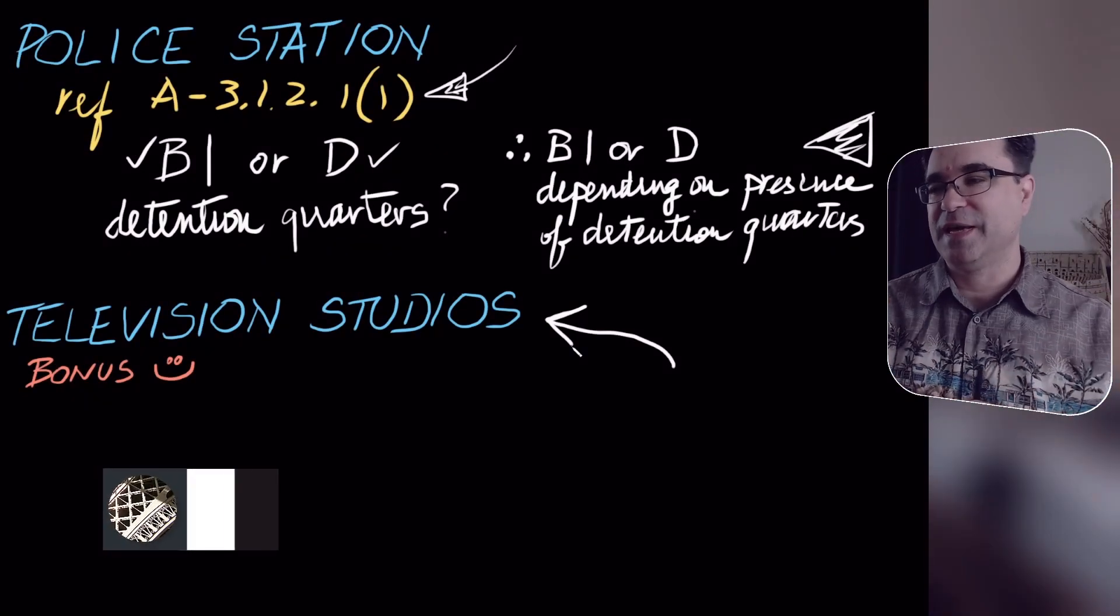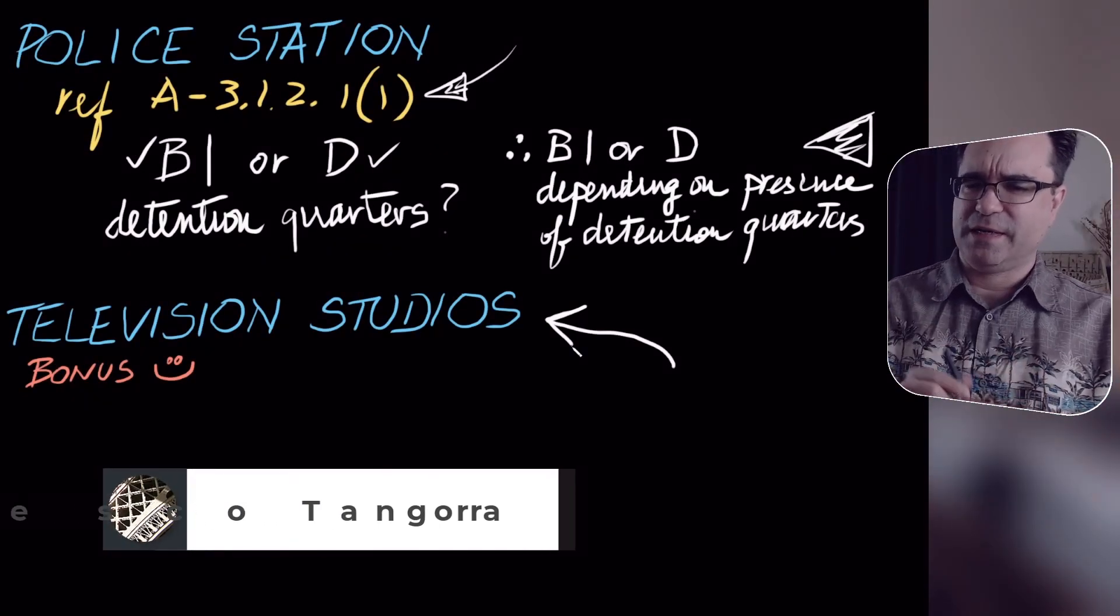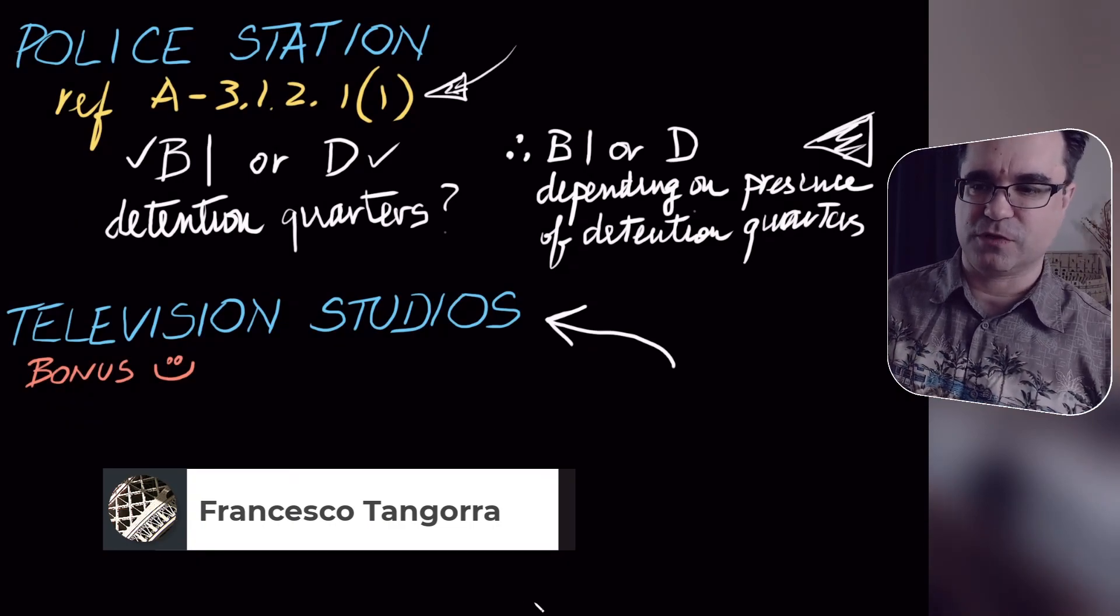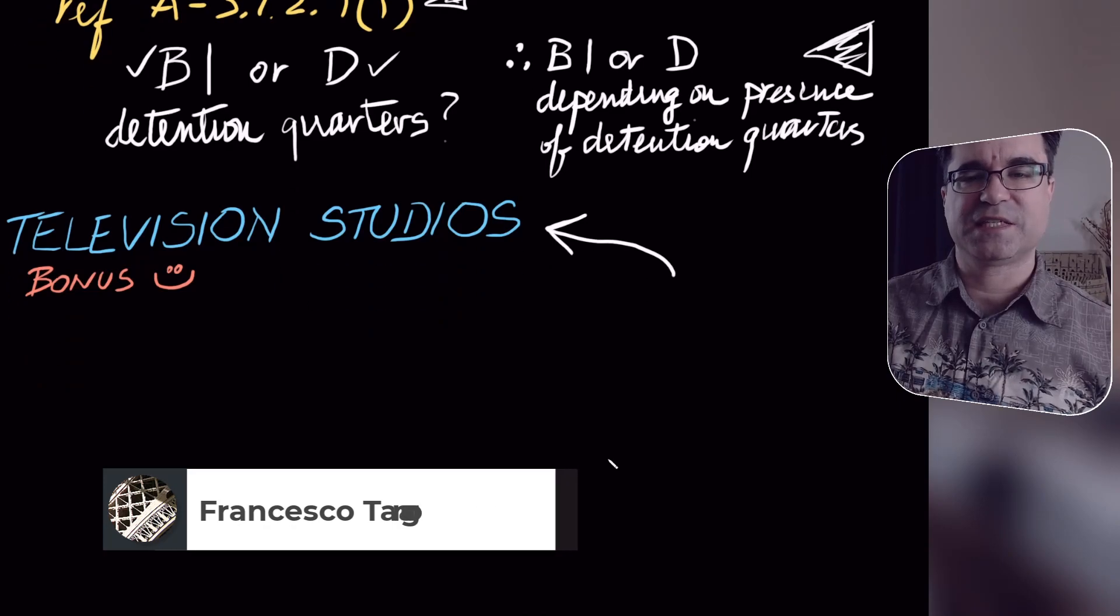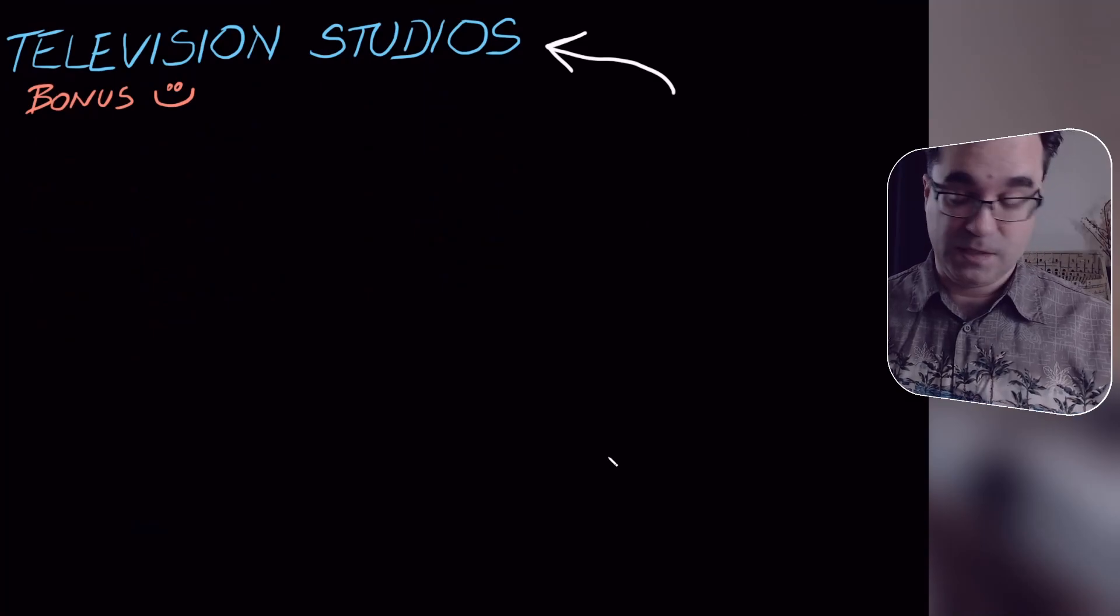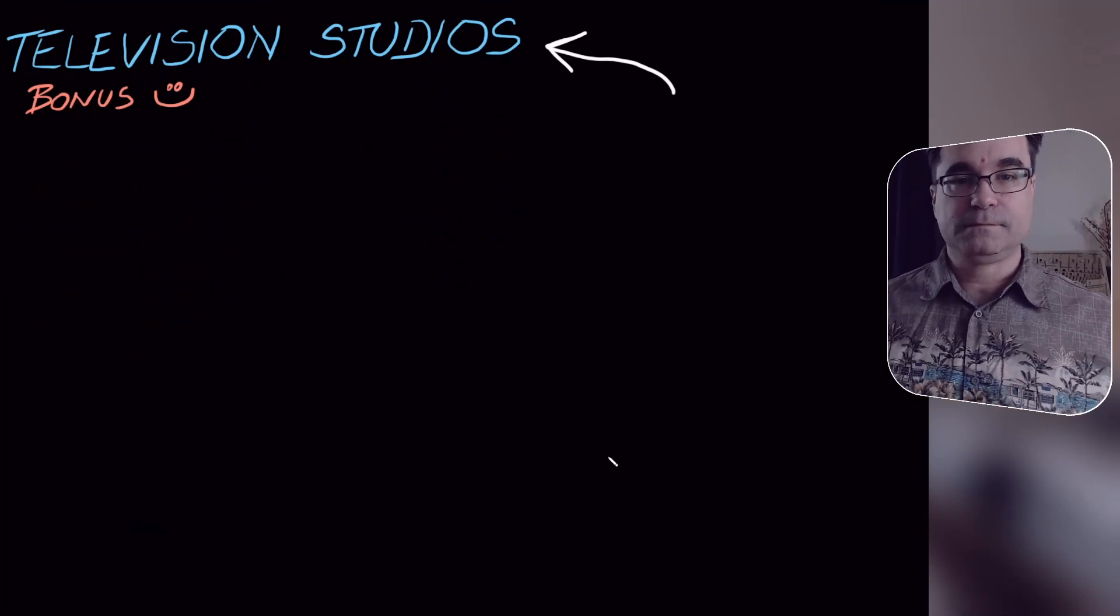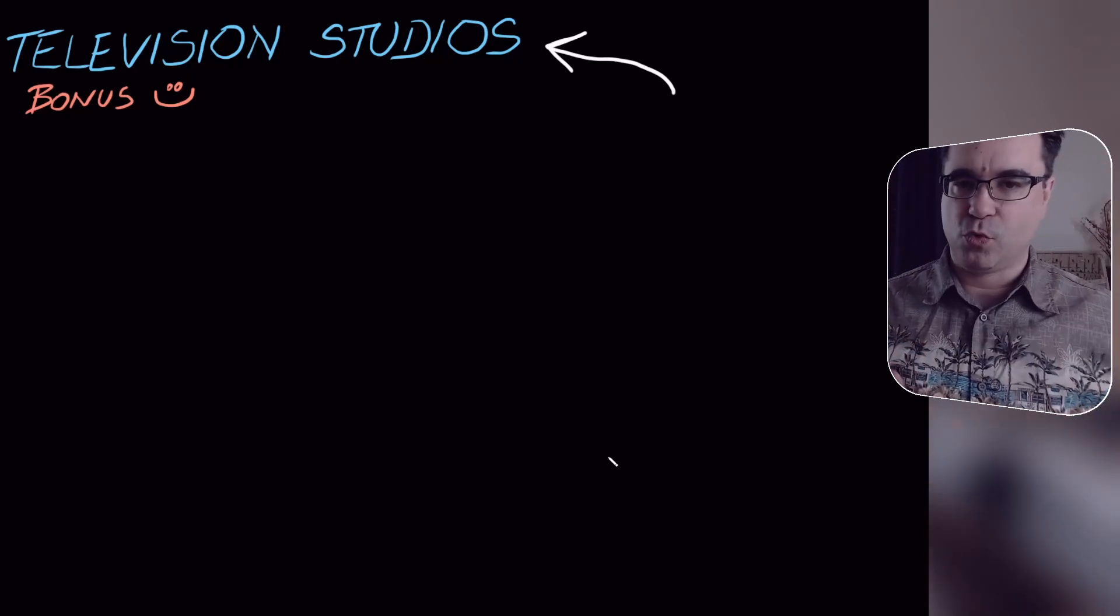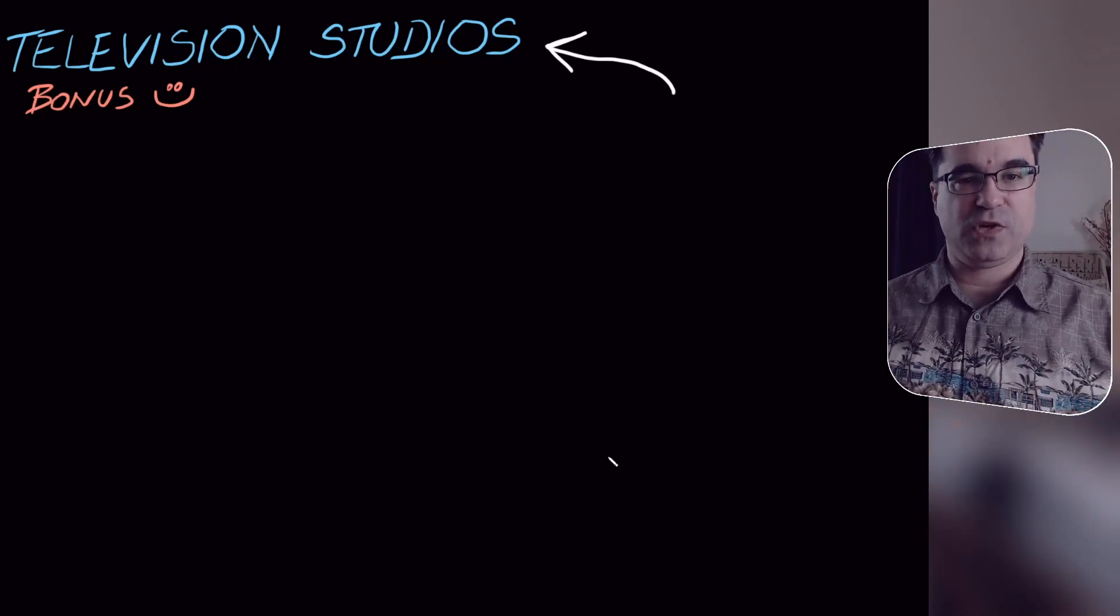Welcome back. Francesco here. Example two was running a little long, so we're going to do television studios as the last portion for example number two, and then some further final thoughts to talk about the topic of finding the major occupancy of any building. So this is a bonus. This is not actually part of question one, homework one, television studios, but let's see if we can figure this out.